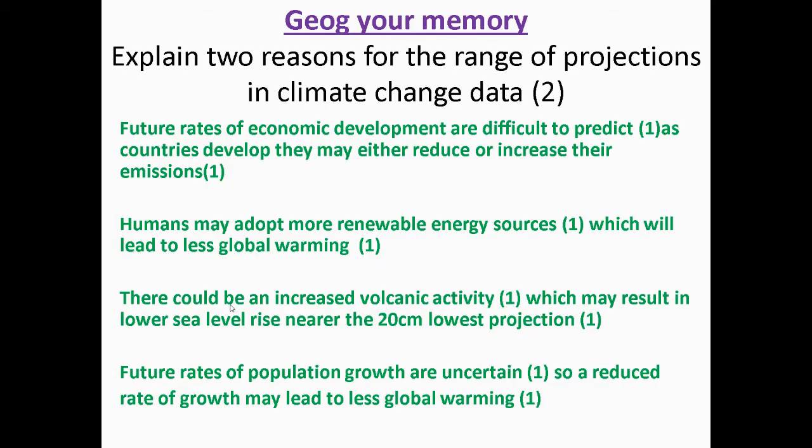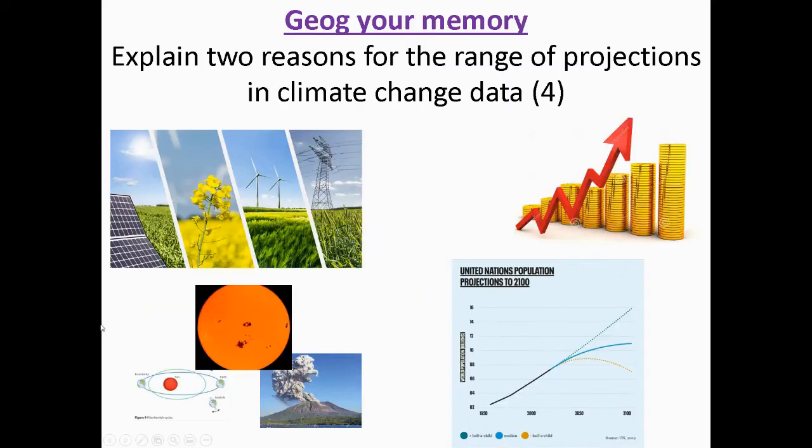You could also think about there could be an increase in sunspots, meaning that temperature might rise more rapidly, or the orbital change might take place. So our natural events are harder to predict, which means that the range of projections could be more complex than initially thought. So you can see that down here with your three natural causes of climate change that you have studied.